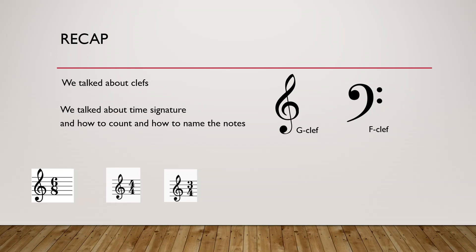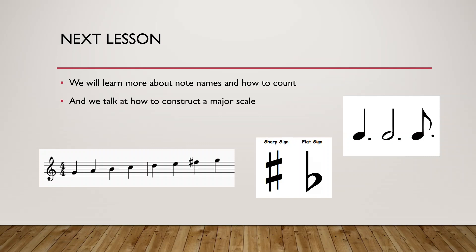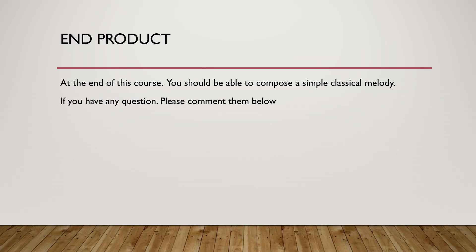So let's do a recap. We have talked about clefs — about G clef and about F clef. We talked about how to read notes in those two clefs, and why we use different clefs. We also talked about time signatures and how to count notes in 3/4, 4/4, and 6/8. In the next lesson, we will learn more about how we name notes and how to count. We will talk about flats and sharps and dotted notes. We will also talk about how to construct the major scale. At the end of this course — all the videos together will be about four hours of information — you should be able to compose a simple classical melody with everything we will cover.